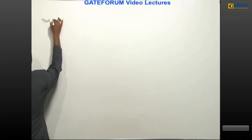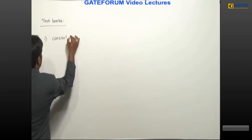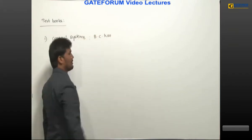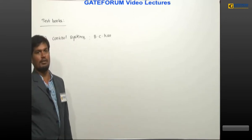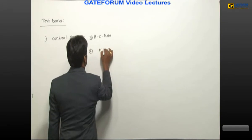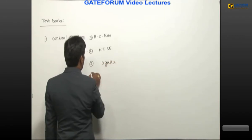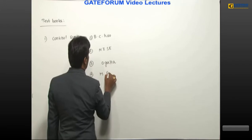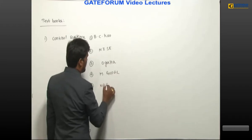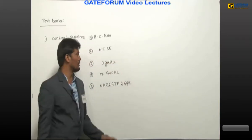The reference textbooks for preparing control systems are: first, Control Systems by Benjamin C. Kuo — the theory is very good and problem standard is also very good. Second, Control Systems by Ogata. Third, Control Systems by M. Gopal, who is an IIT Delhi professor. Fourth, Control Systems by Nagrath and Gopal. There are many more textbooks, but these are the main ones I am referring for theory as well as problem standards.